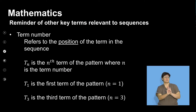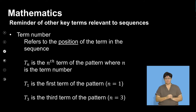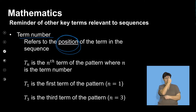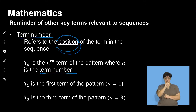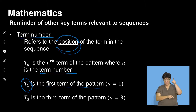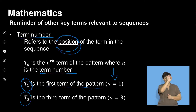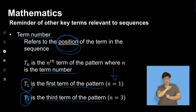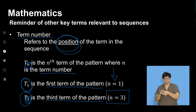Before we look at an example, I'm going to go over some important definitions. Please remember that a term number refers to the position of the term in a sequence. Tn is the nth term of the pattern, where n is the term number. So for instance, T1 is the first term because n is equal to 1. T3, where n is 3 because of that subscript, is the third term of the pattern. The n refers to the term number.